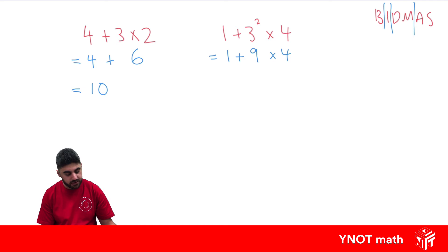Now we've got addition and multiplication. We know multiplication comes before addition, so let's do that next. So 9 times 4 is going to give us 36. We haven't added the 1 yet, and we can do that now because that's the only thing left to do, which is going to give us 37.